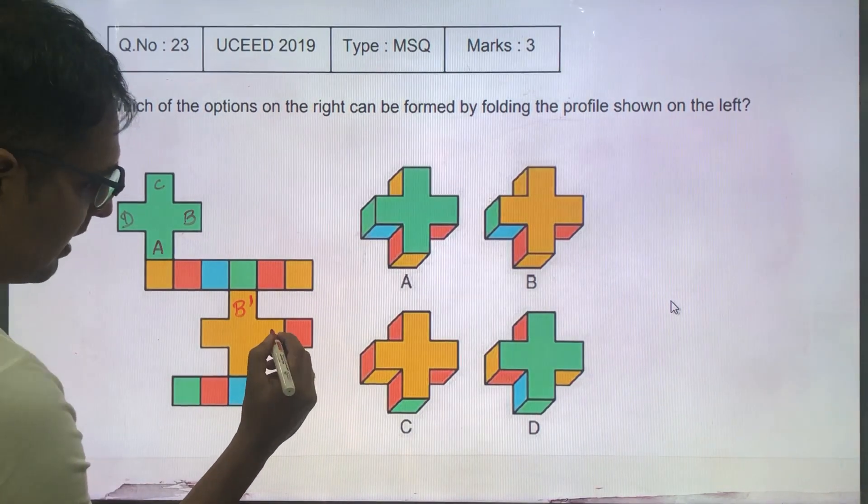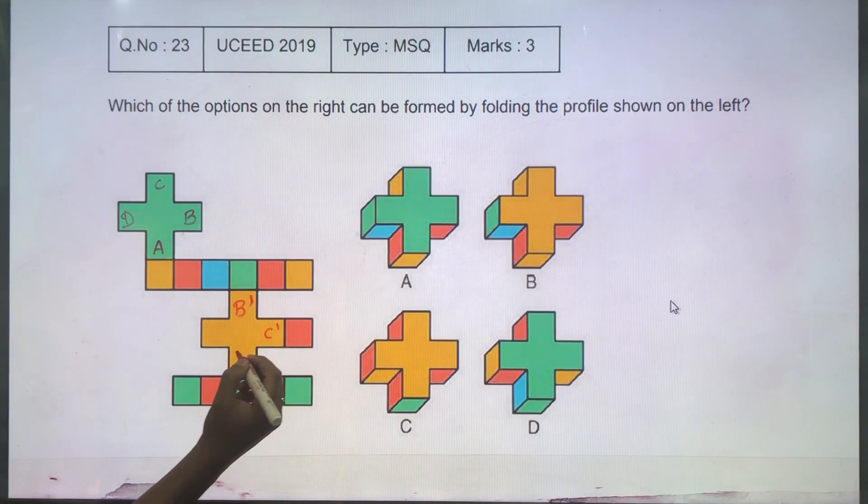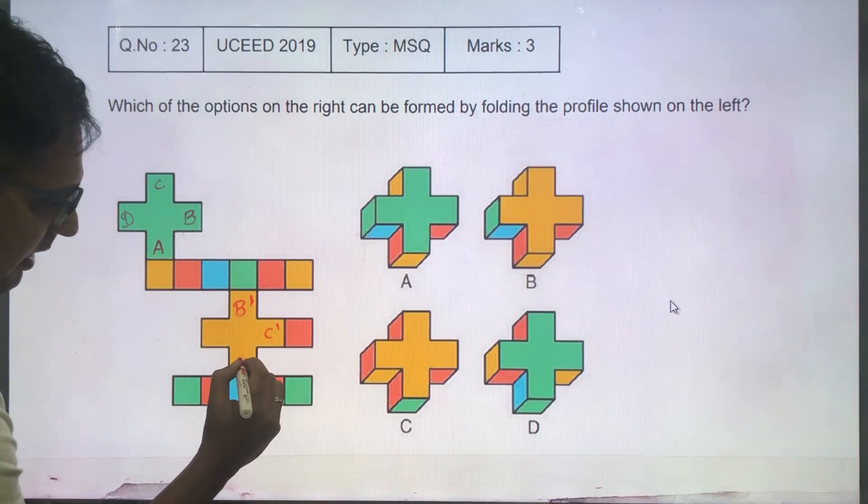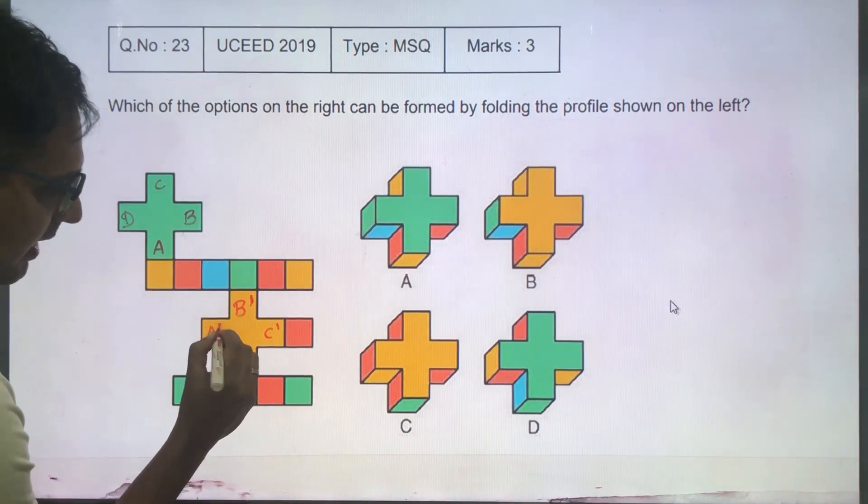And similarly, this will be C dash. This will be D dash and this will be A dash.